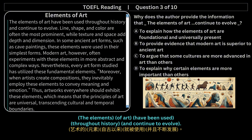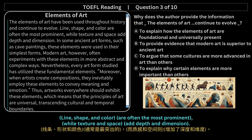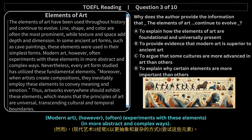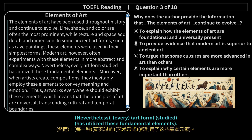The elements of art have been used throughout history and continue to evolve. Line, shape, and color are often the most prominent, while texture and space add depth and dimension. In some ancient art forms, such as cave paintings, these elements were used in their simplest forms. Modern art, however, often experiments with these elements in more abstract and complex ways. Nevertheless, every art form studied has utilized these fundamental elements.